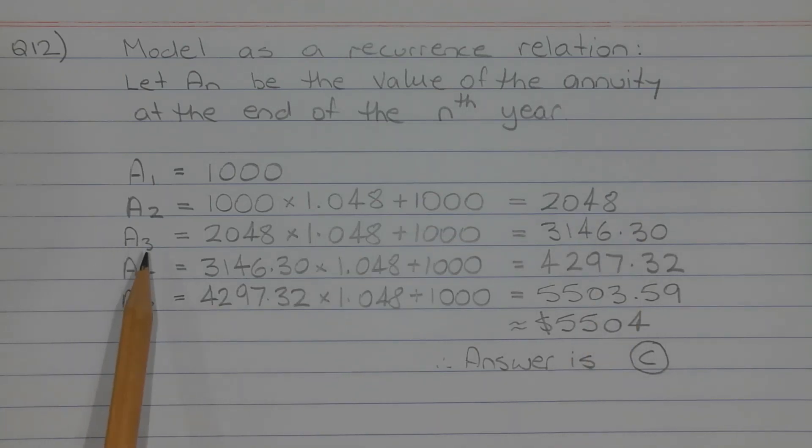Now at the end of the third year, we find this value by taking the value at the end of the second year. So A2, which is 2048, that's going to be increased by 4.8% again. So we're going to multiply that by 1.048. And then Josephine is going to deposit another $1,000 and that equals $3,146.30.